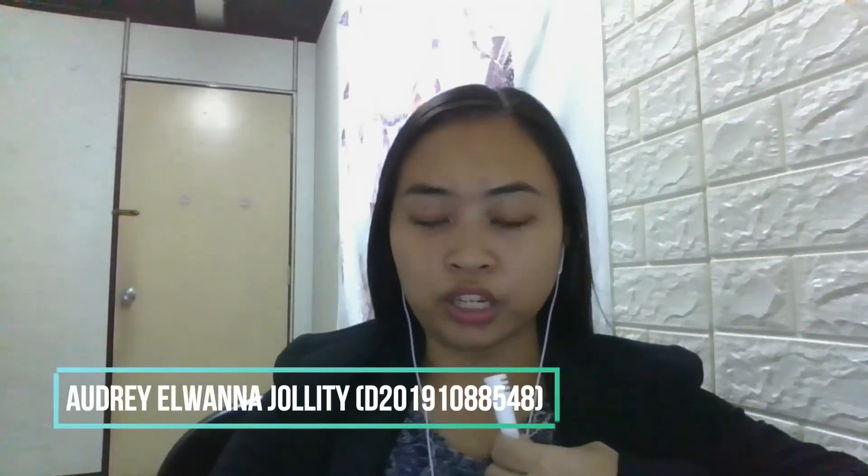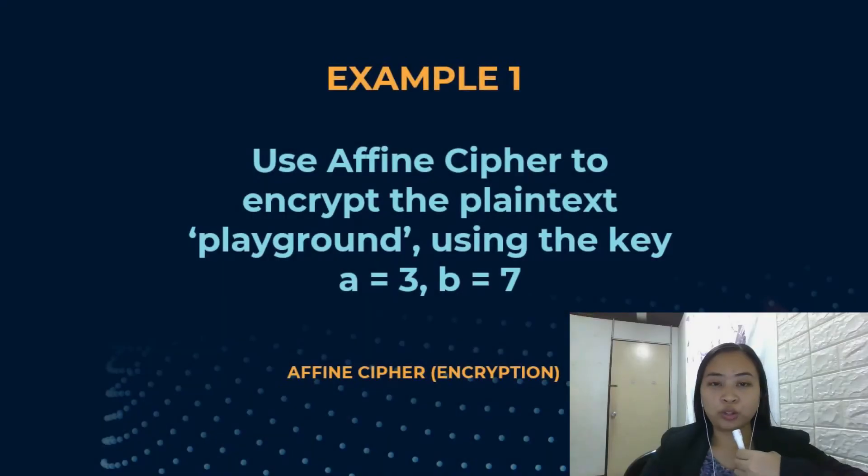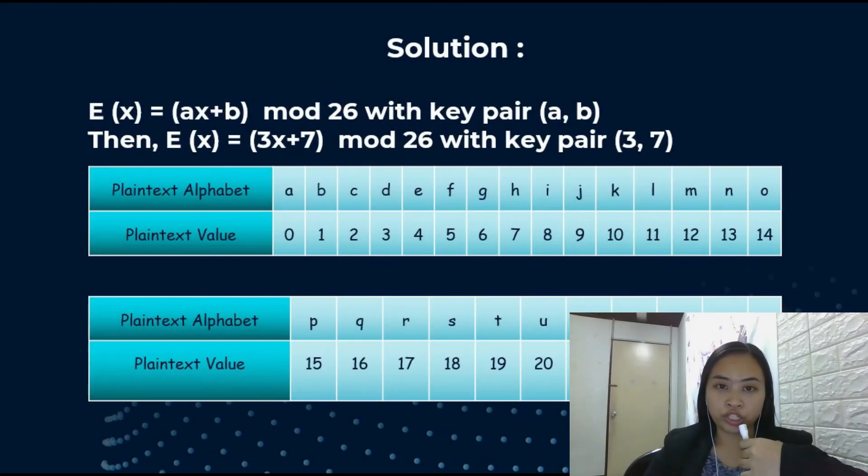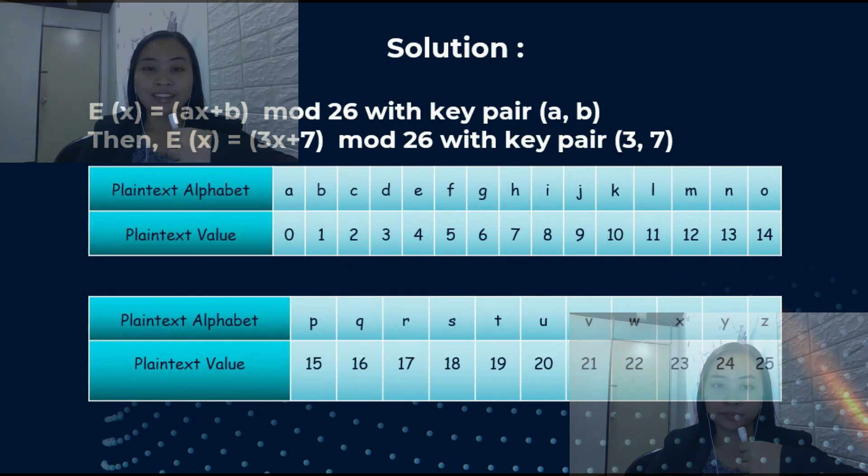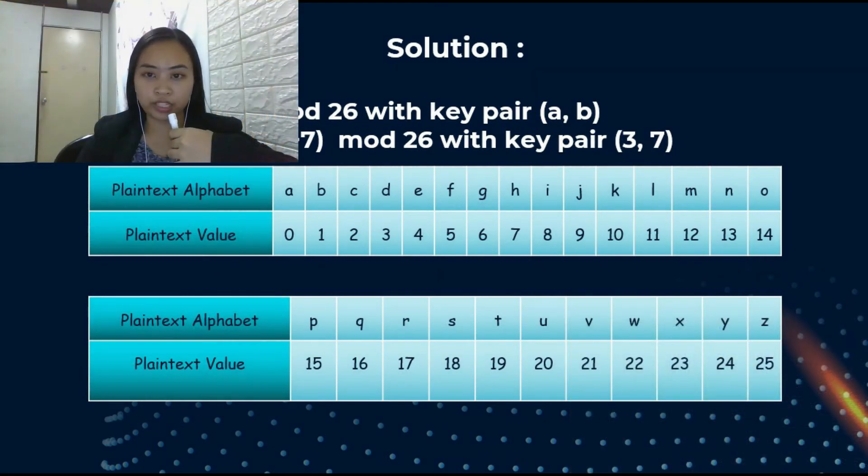Hello everyone, my name is Audrey Elwanna Jollity with metric number D20191088548. And now I will proceed with the examples of affine cipher. The first example is about encryption in affine cipher. The question is, use affine cipher to encrypt the plaintext playground using the key A equals to 3 and B equals to 7. For the solution, we know that the equation of affine cipher is E(X) equals to AX plus B mod 26 with key pair AB. Then we substitute the key pair value to the equation. Then we get E(X) equals to 3X plus 7 mod 26 with key pair (3, 7).